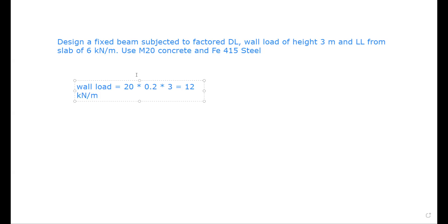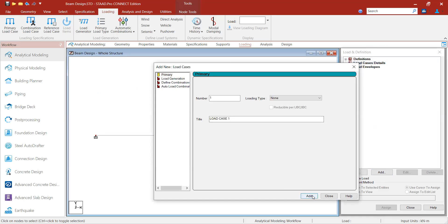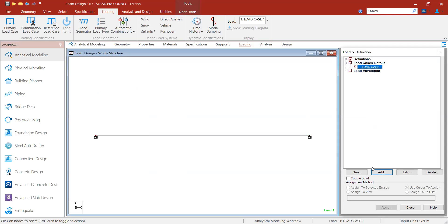The load from the slab carried on the beam is calculated by load transfer mechanism, but here it is directly given as 6 kN/m UDL. Note that 12 kN/m and 6 kN/m are not yet factored loads — we will handle that in STAAD Pro. I will add only one load case — Load Case 1 — which will include all three loads.